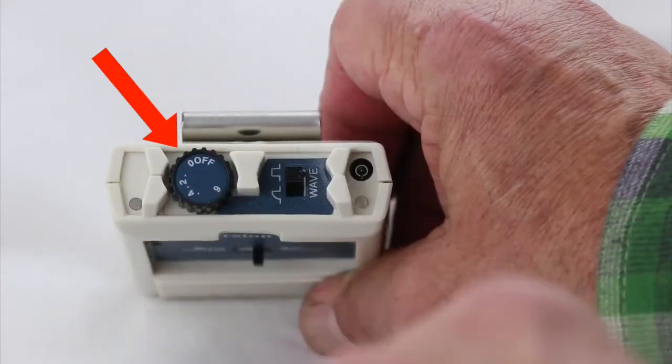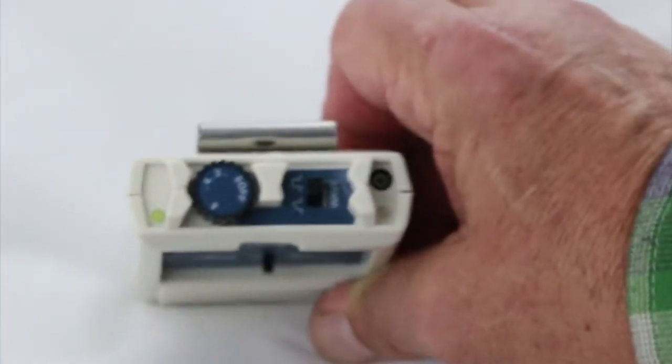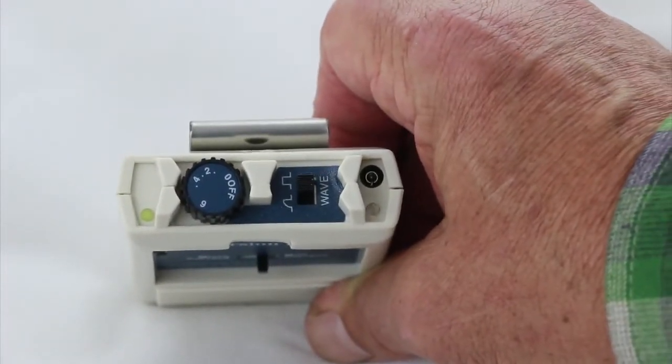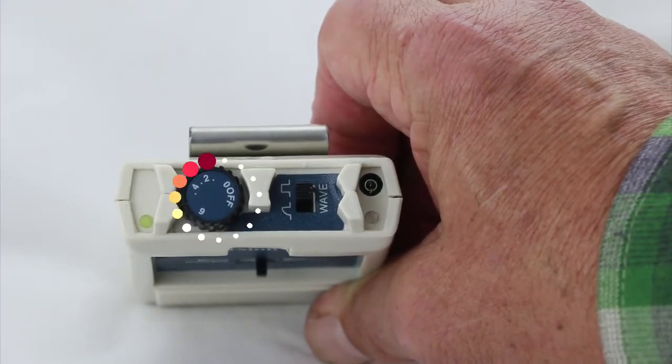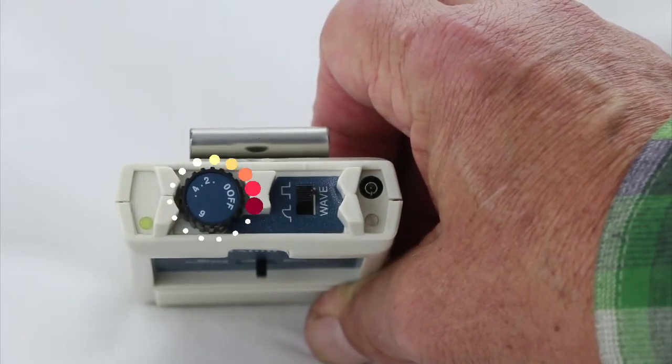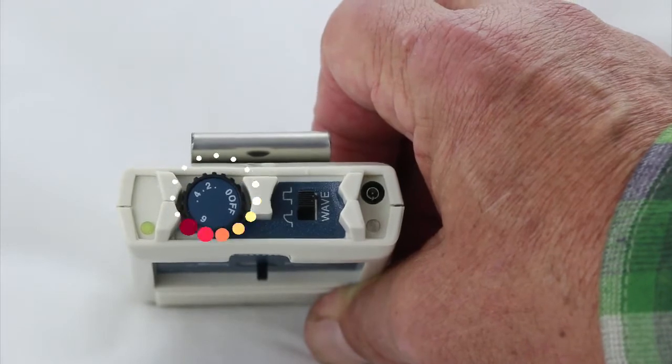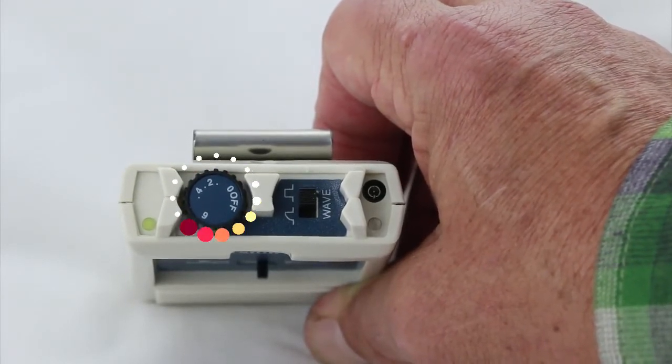Then this knob here is how you adjust the current, and there are numbers on it. Think of this as a volume knob. If you turn this clockwise, you turn the unit on. So this is what we've done. We've turned the knob clockwise. This turns the unit on.